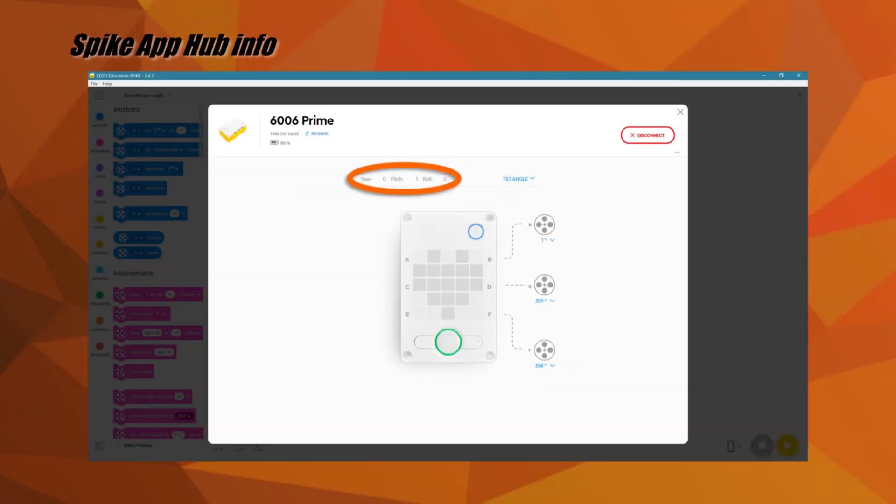On the hub dashboard, you will see the name of the hub that is currently connected to the app, the hub OS installed, and the battery charge level. Furthermore, you will see a depiction of your hub and which ports have motors or sensors connected with their respective status. Above the hub picture, you will see a line that shows the current reading for the yaw, pitch, and roll sensors built into the brick. We will get more into these sensors later on in the video.